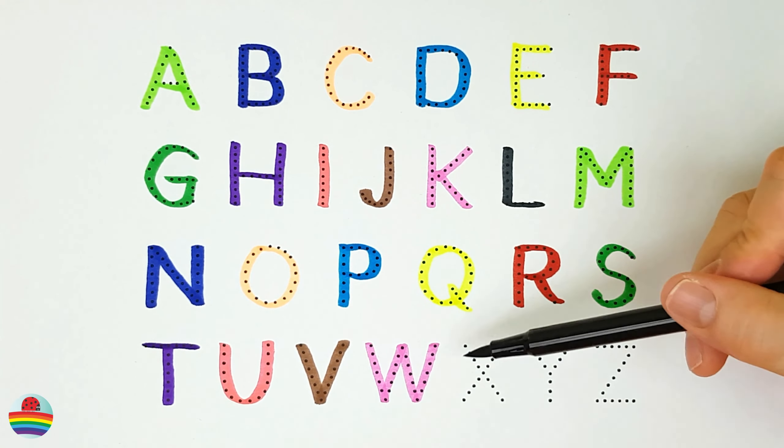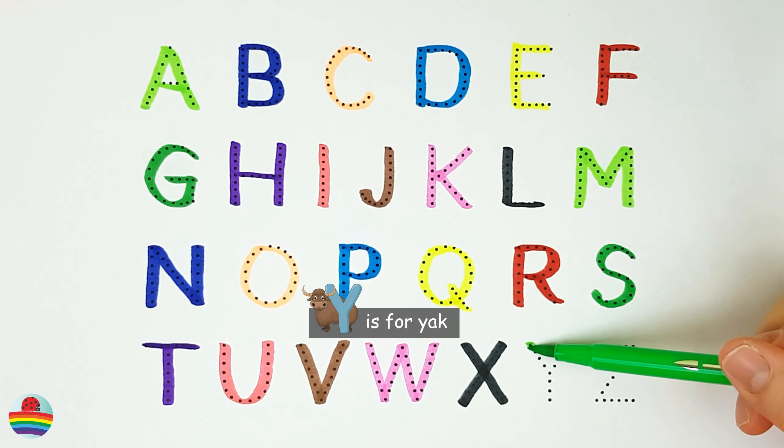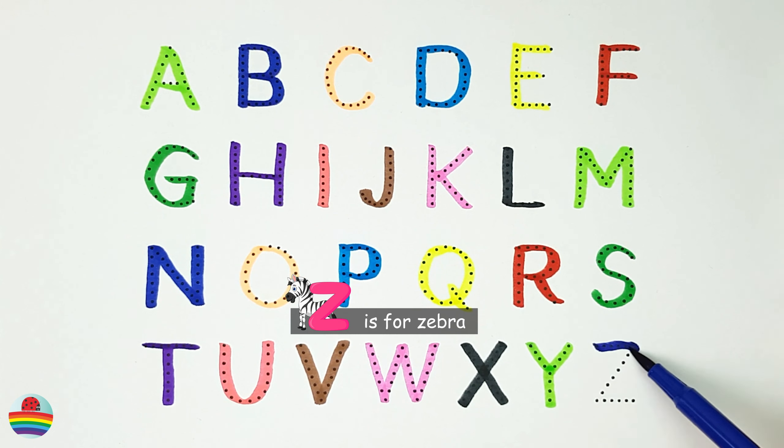W. W is for Walrus. X. X is for X-Ray Fish. Y. Y is for Yak. Z. Z is for Zebra.